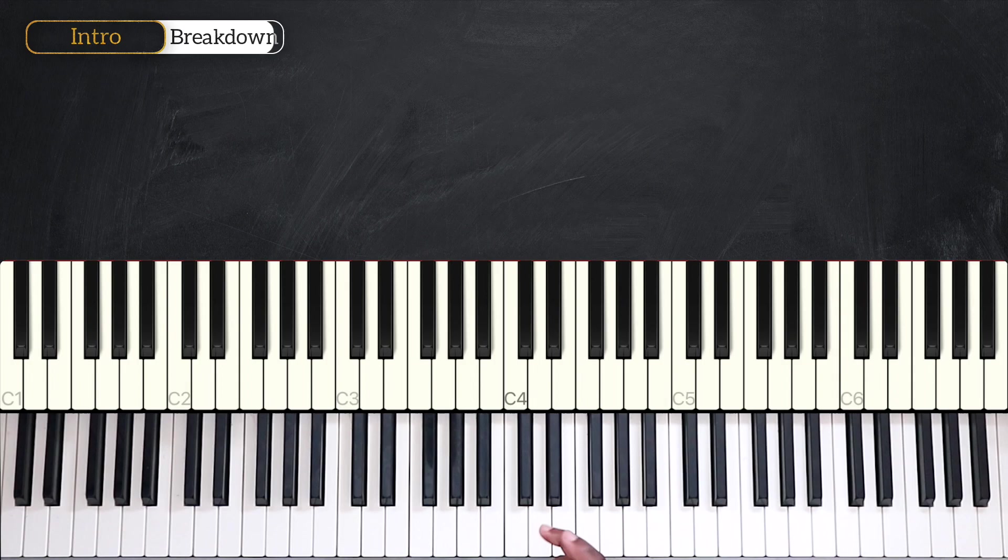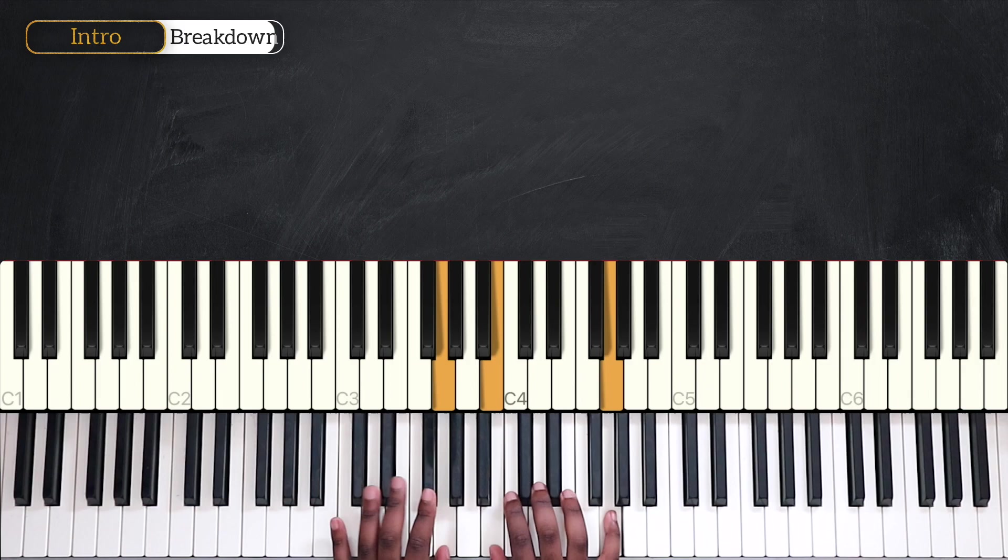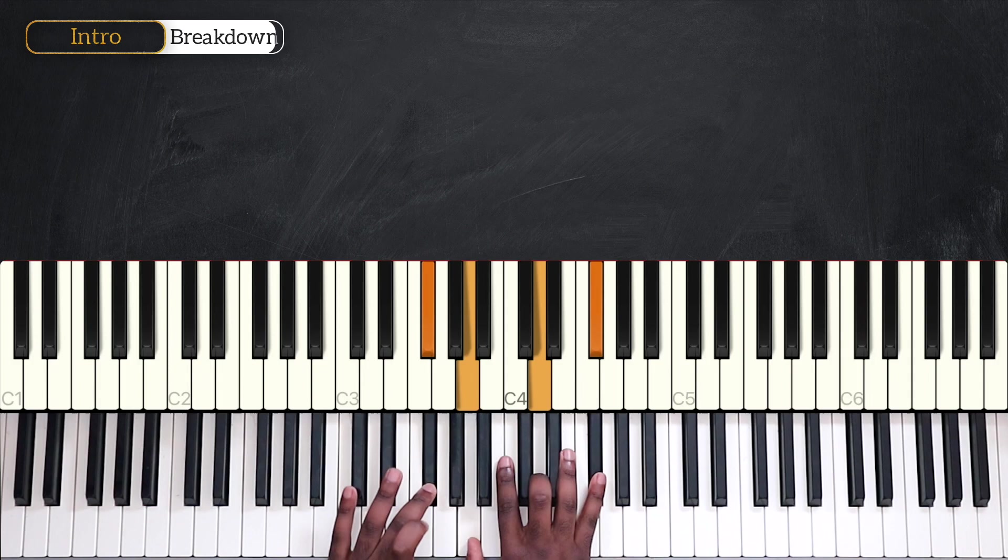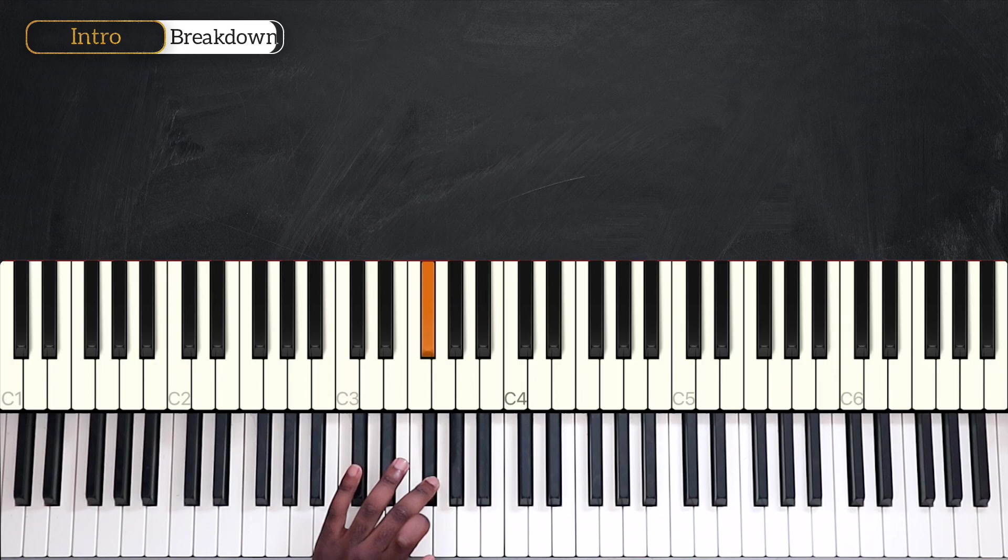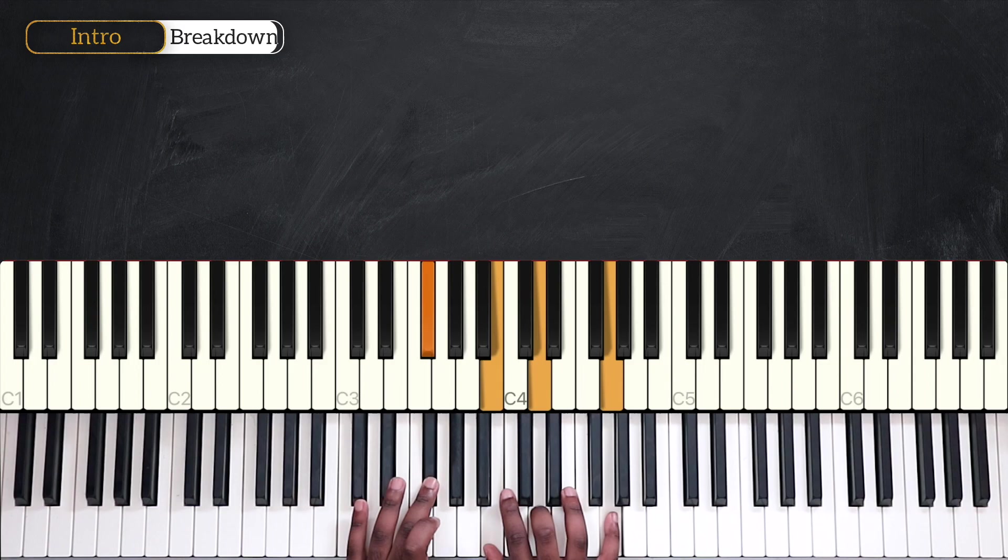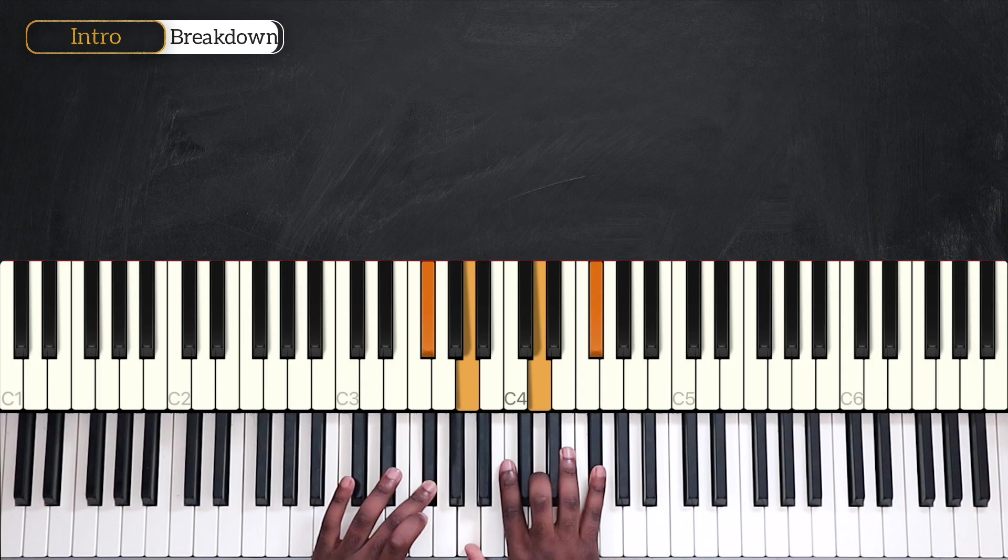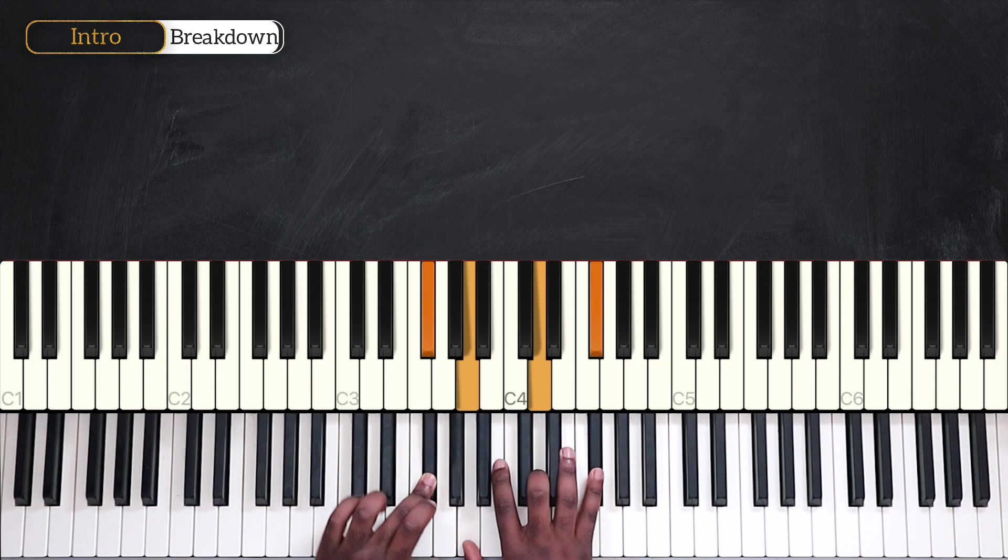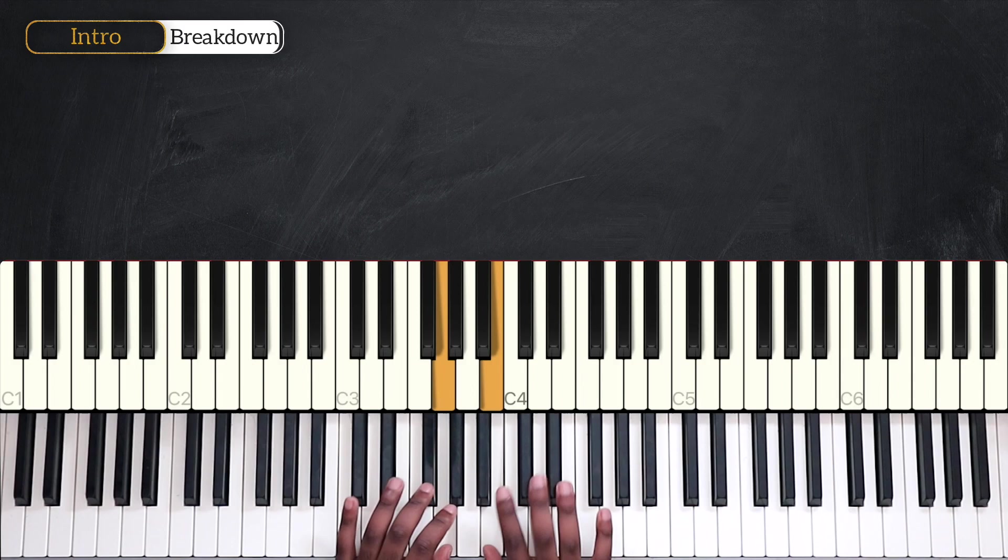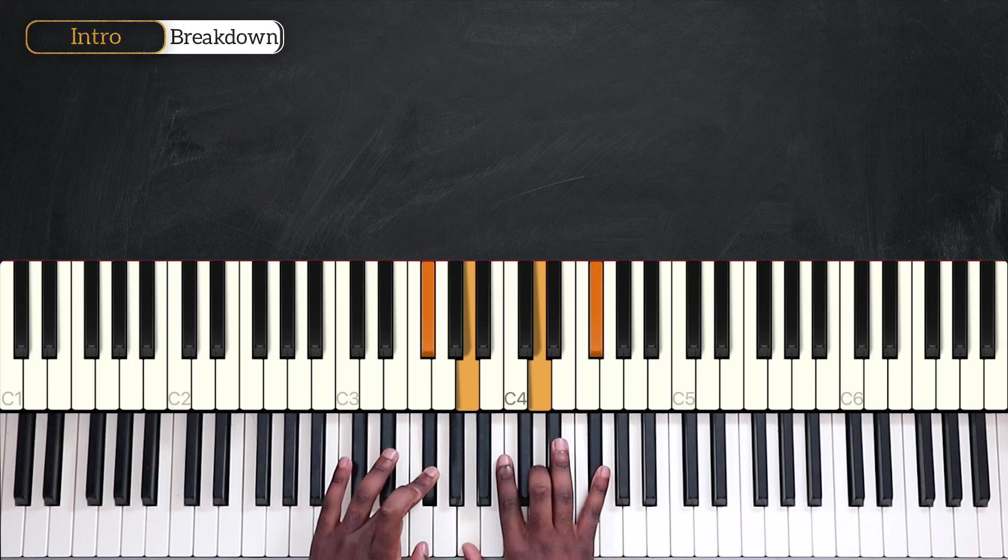Then we're back on G major. Basically, we're playing the same thing. But after playing F sharp, going down on the left. Instead of playing D, B, and G, we have D, A, and F sharp. And that's D over F sharp. Okay. And that's the ending of the intro.